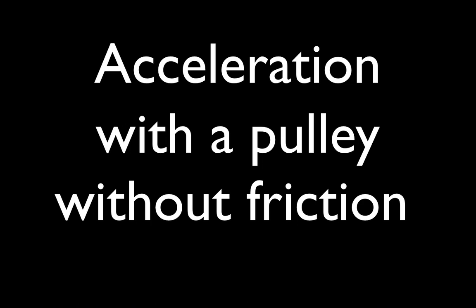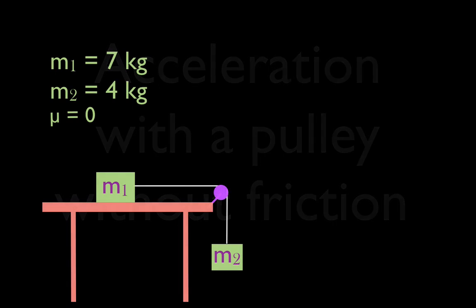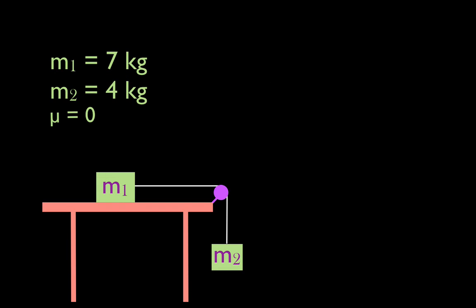In today's video we're going to go over another problem involving acceleration without friction. We have mass m1 which is sitting on the table. m1 has a mass of seven kilograms. The coefficient of friction between m1 and the table is zero — there is no friction between these two objects. This is the magic frictionless table.